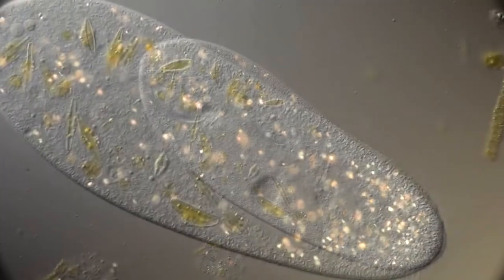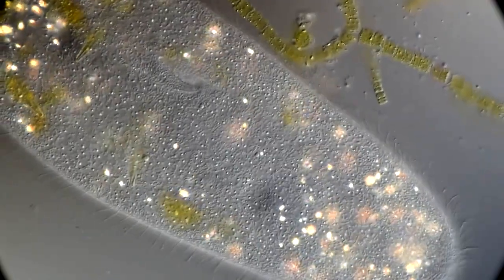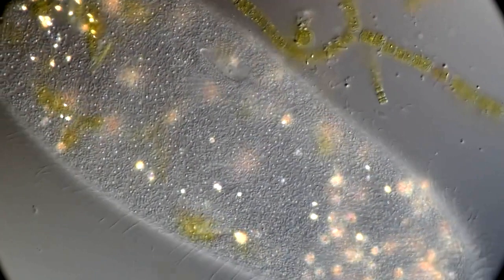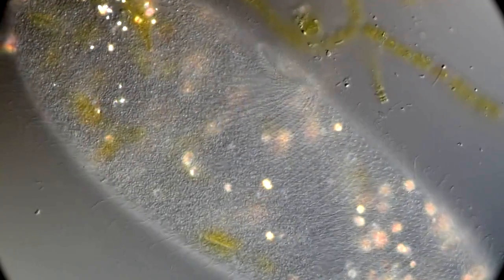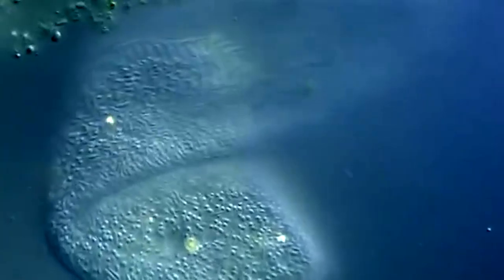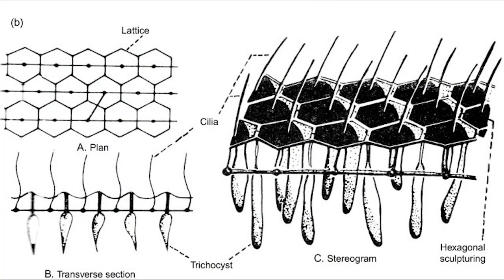The body of the paramecium cell is enclosed by a stiff but elastic membrane called pellicle. Pellicle is made up of a thin, gelatinous substance produced by the cell. The layer of the pellicle gives the paramecium a definite shape and good protection of its cell content. The pellicle is also elastic in nature, which allows the paramecium to slightly change the shape. Under higher powers of the microscope, the pellicle is seen to be made up of a great number of hexagonal areas produced by striations on the surface. These striations are really very fine grooves which cross one another obliquely.